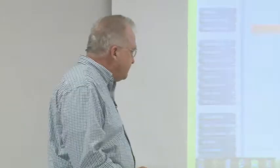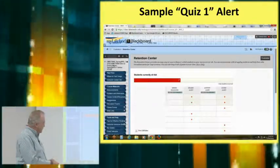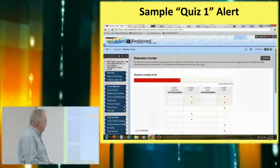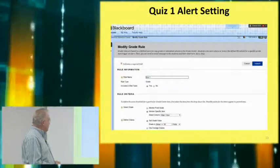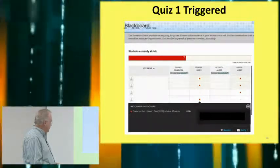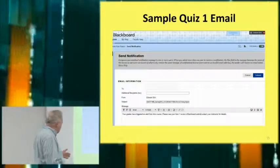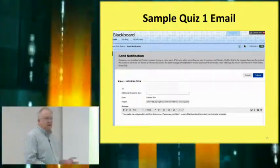This is the sample quiz one alert. It brings up the same table — names are on the left, quiz grade alerts appear here. I click on that red circle for the student, which brings up the Notify option. Once I click Notify, it brings up a stock email that I've modified to say: your grades have triggered an alert from this course — please see your quiz one score on Blackboard and/or contact your instructor. Again, the email is sent to both the student and to me as the instructor.